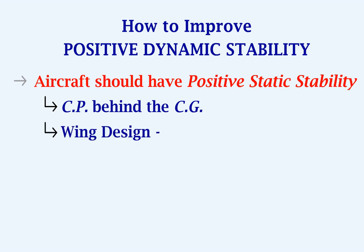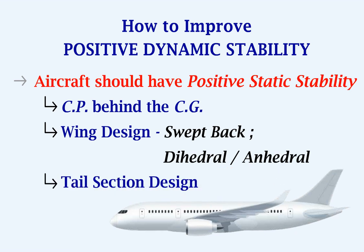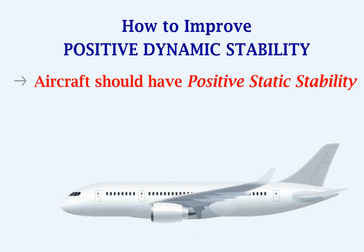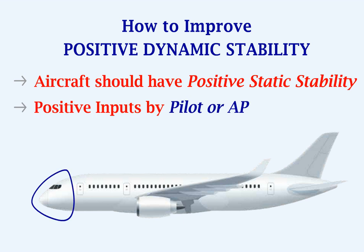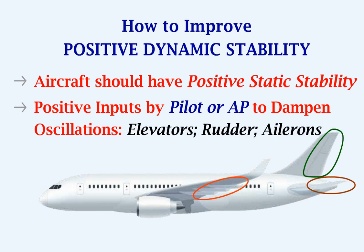The wing design can be modified into a swept-back wing and given a small dihedral or anhedral angle. A proper tail section design — meaning a good design of the horizontal and vertical stabilizers — also helps. After the disturbance, positive inputs by the pilot or the autopilot to dampen the oscillations, with the help of control surfaces such as elevators, rudder, and ailerons, will improve the positive dynamic stability.